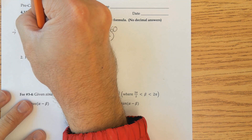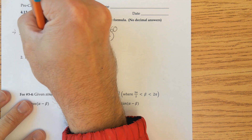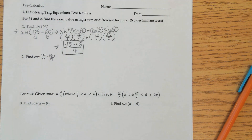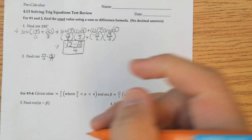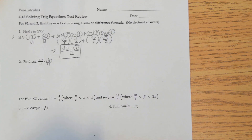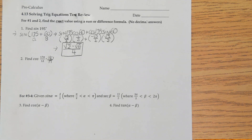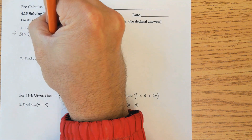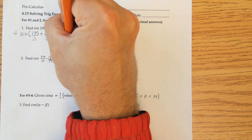Next one here, we're in radians. I would change this to degrees to make it easier, so we're going to multiply by 180 over pi — that's how you go from radians to degrees. So 17π over 12 times 180 over pi gives us 255. So I have now cosine of 255.